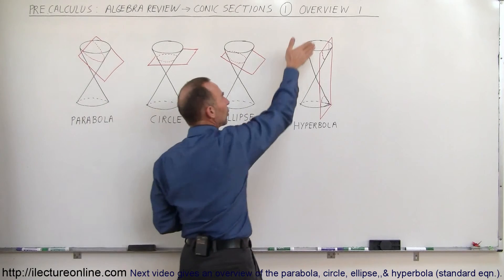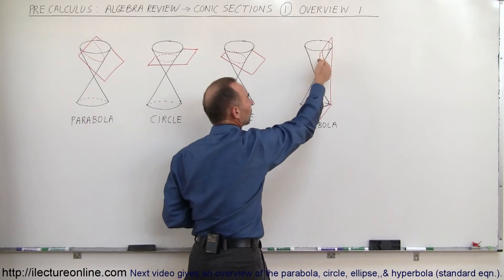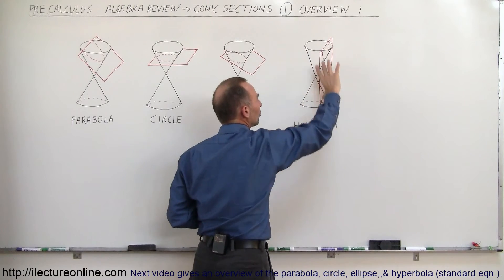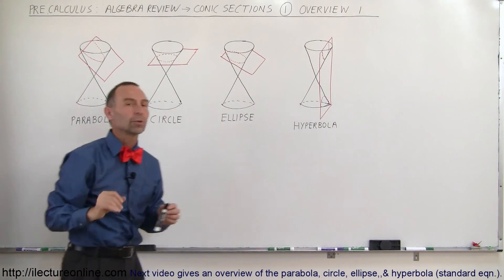Finally, if we cut the cone vertically so that we have a section that sticks out this way and a section that cuts this way, those two sections are called a hyperbola.